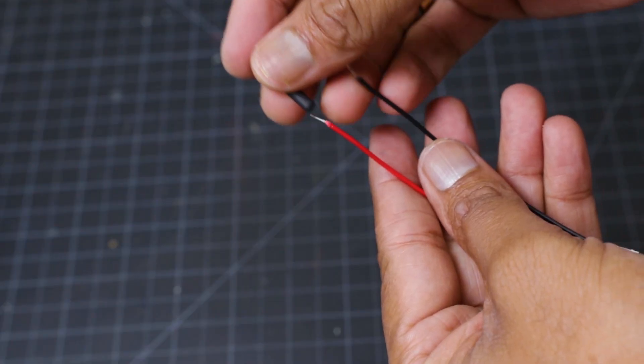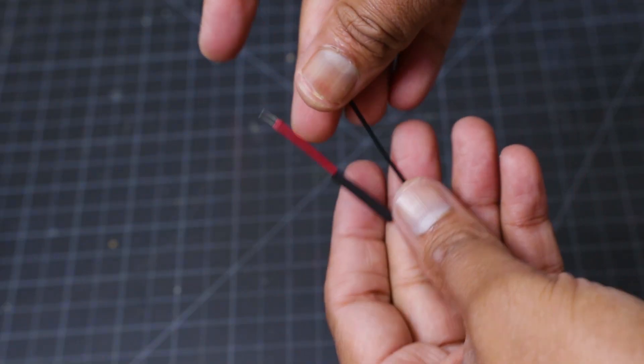Connect JST connector to the battery holder. I used heat shrink tube to insulate the joints.